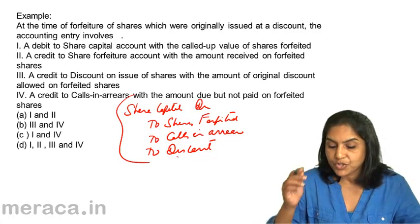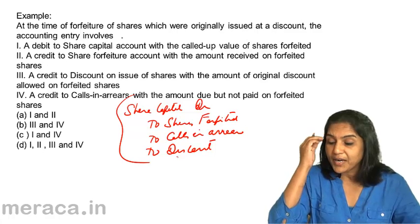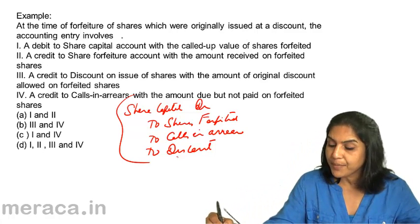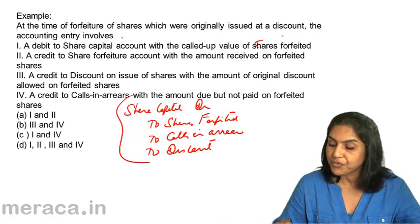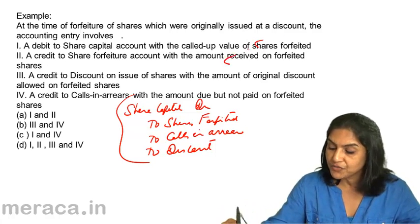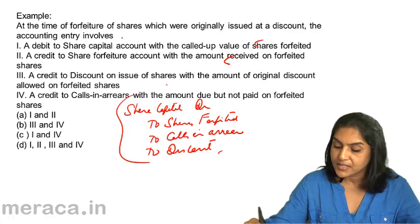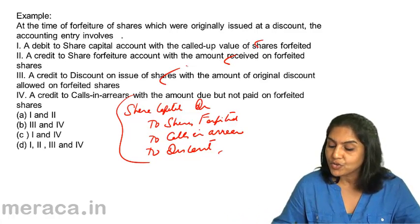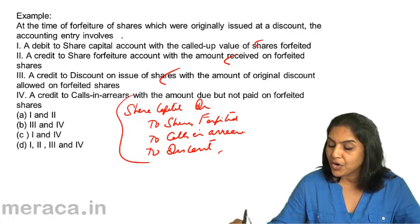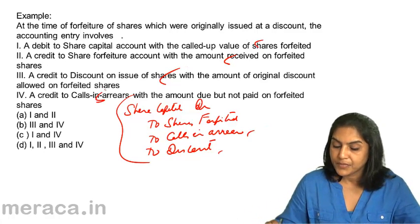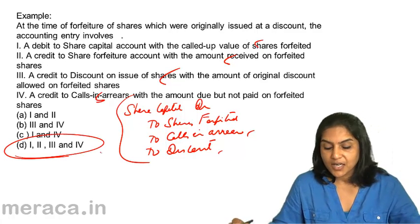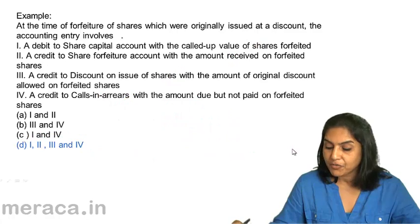Having written this, let us see which options are correct. There would be a debit to share capital with the called-up value — correct. A credit to share forfeited with the amount received on shares forfeited — correct. A credit to discount on issue of shares with the amount of original discount — also correct. A credit to calls in arrears with the amount due but not paid — correct. Therefore, the correct answer is D: 1, 2, 3 & 4.